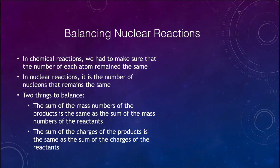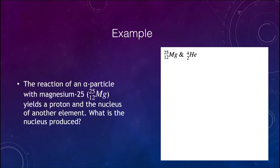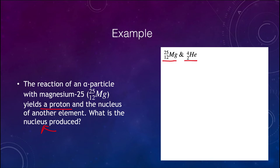Let's look at an example. We're going to look at the reaction of magnesium-25, and we're going to bombard it with an alpha particle. We're going to see what comes out. We're given that it will yield a proton and some other element, and we're trying to find what that new element is — it will not be magnesium.